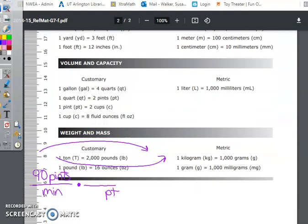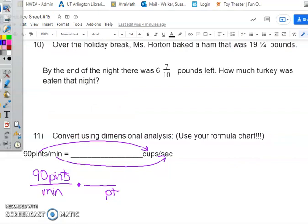And right there, one pint is two cups. So it's there. So I can go in and put it. One pint is two cups. Now, every time I finish a conversion, I do cross, cross.